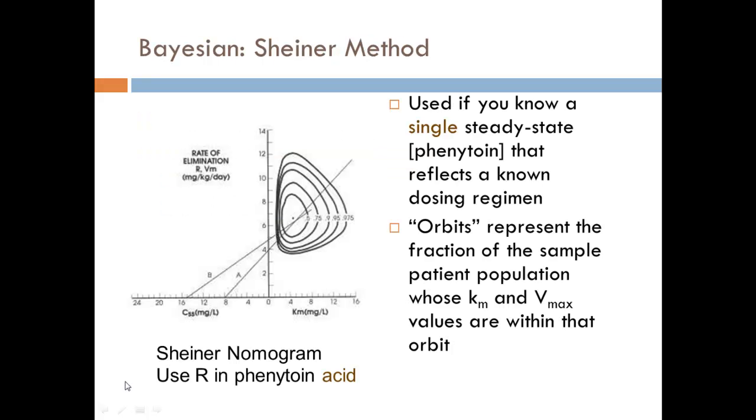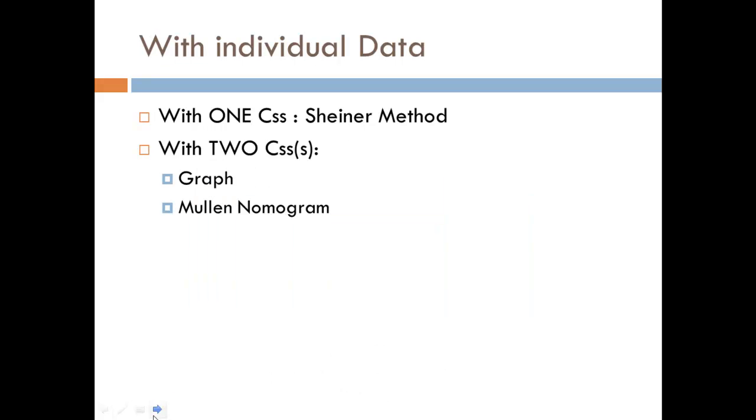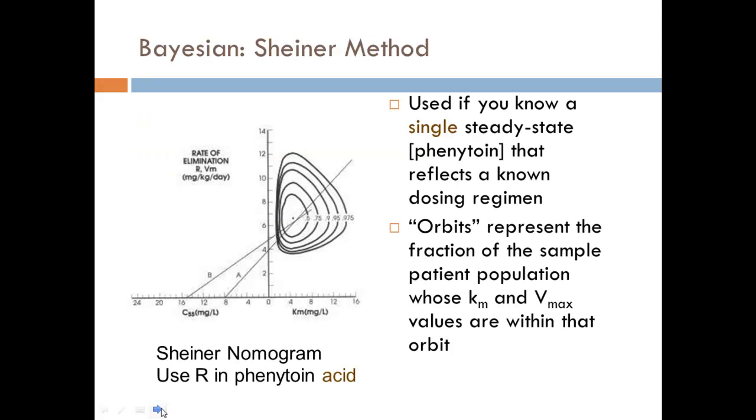There's this calculation method, which we'll do some of in class. We can also, with one concentration at steady state, use what's called the Shiner method to determine a new dosing regimen. With two concentrations at steady state, we can use a graphing method or the Mullen nomogram. I'm going to stop here and we're going to hit the Shiner method in the next video.